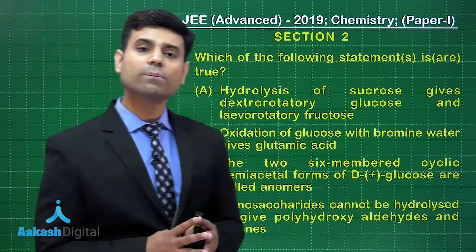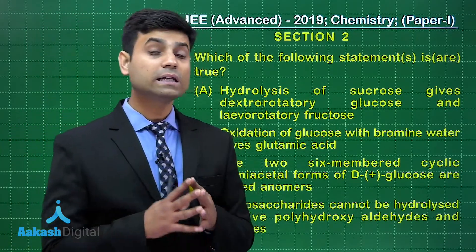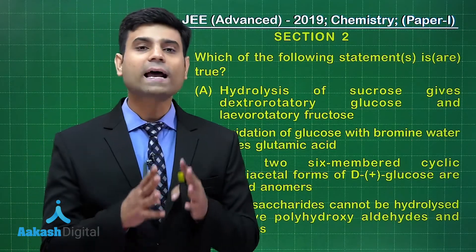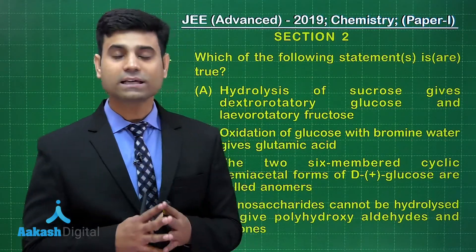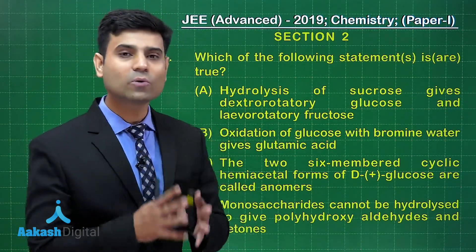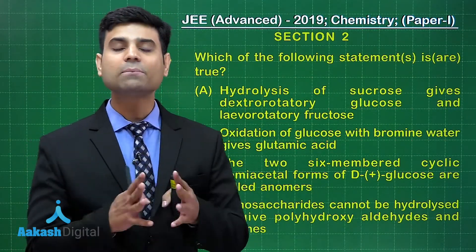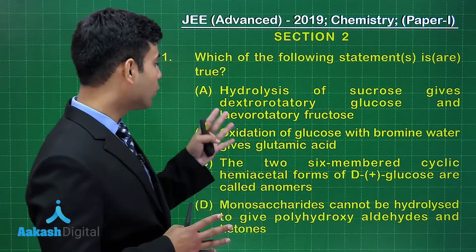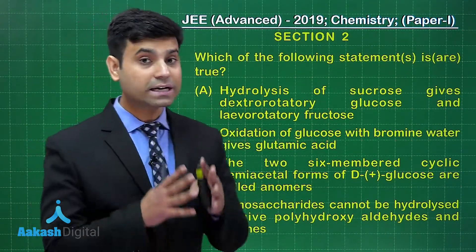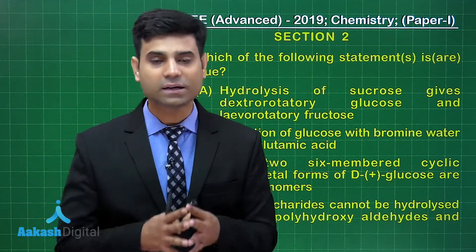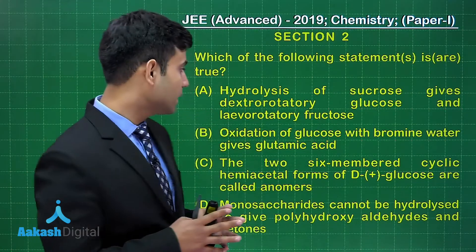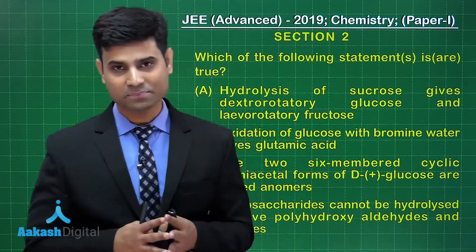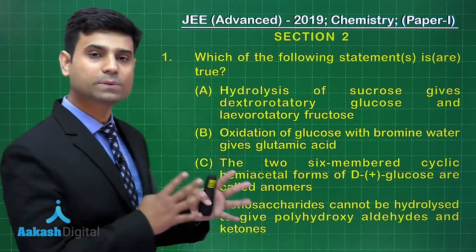If I talk about sucrose, sucrose on hydrolysis gives us D-plus glucose and D-minus fructose. So we have glucose which is dextrorotatory and fructose which is levorotatory. So option A is correct.